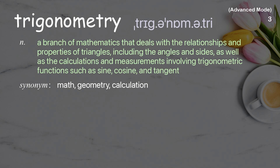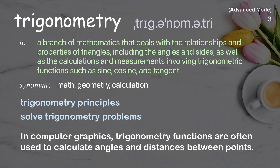Trigonometry: a branch of mathematics that deals with the relationships and properties of triangles, including the angles and sides, as well as calculations involving trigonometric functions such as sine, cosine, and tangent. Examples: trigonometry principles, solve trigonometry problems. In computer graphics, trigonometry functions are often used to calculate angles and distances between points.